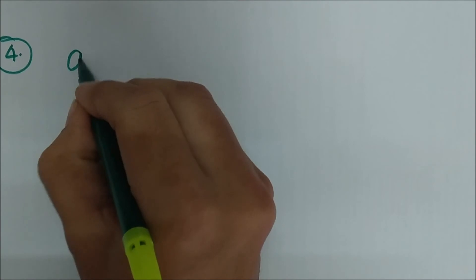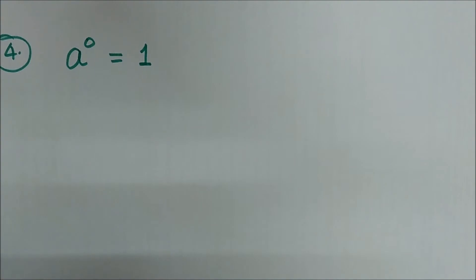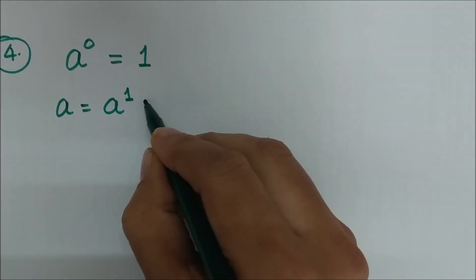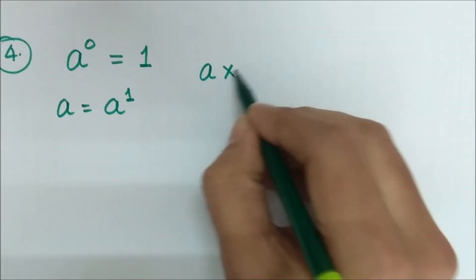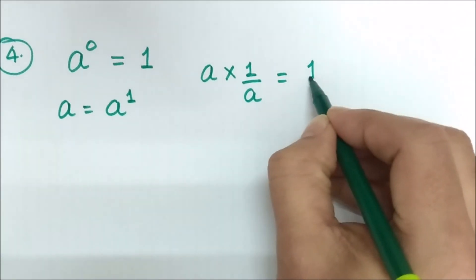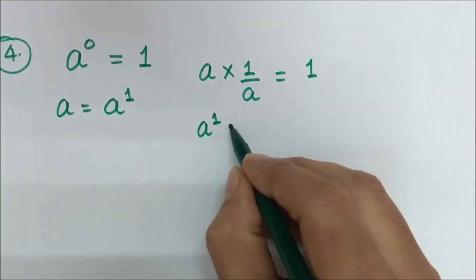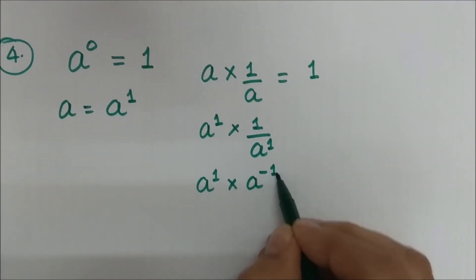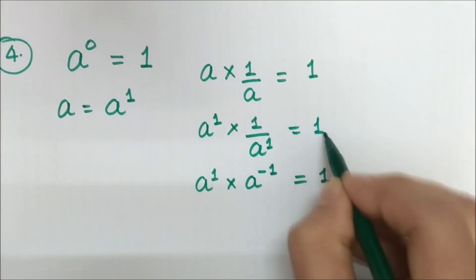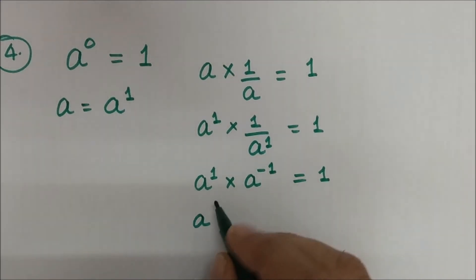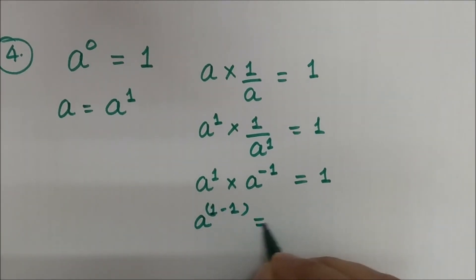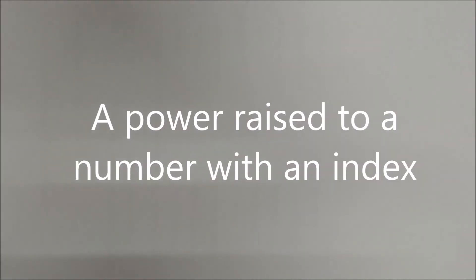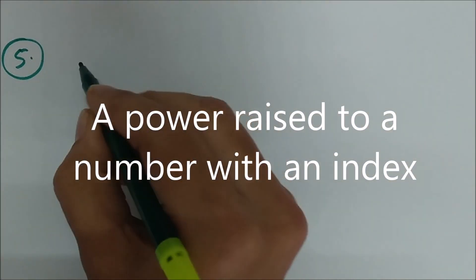What should the value be when the power is 0? It equals 1. We derive this as follows: 'a' can be represented as a raised to the power 1. When multiplied by 1/a, we get 1. This is a raised to the power 1 multiplied by a raised to the power minus 1, which equals 1. Applying the multiplication formula: 1 plus (minus 1) equals 0, so a raised to the power 0 equals 1.